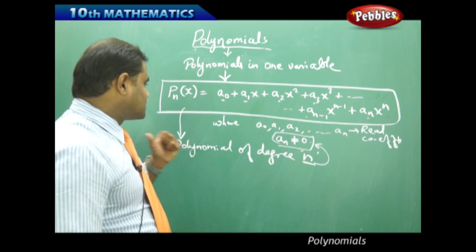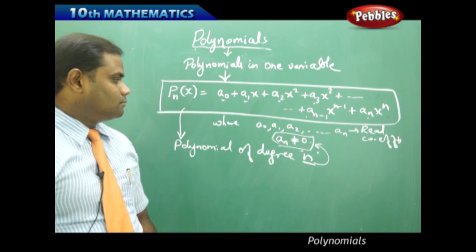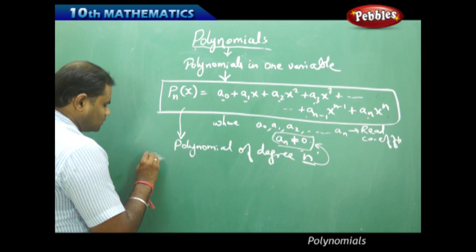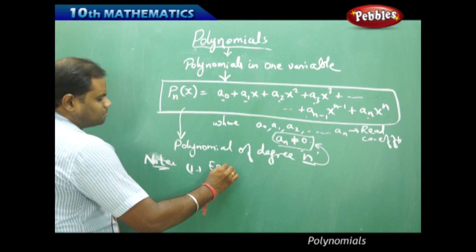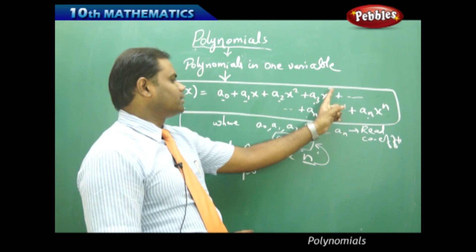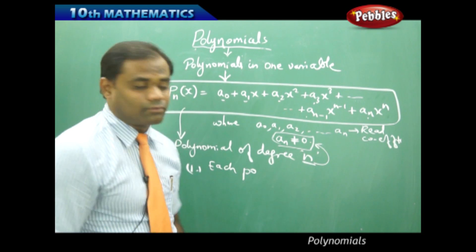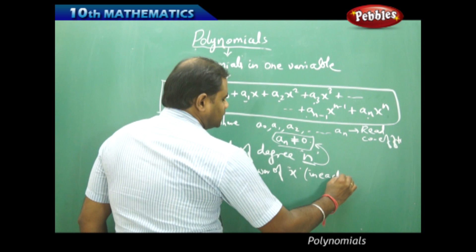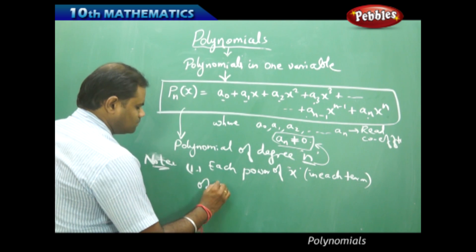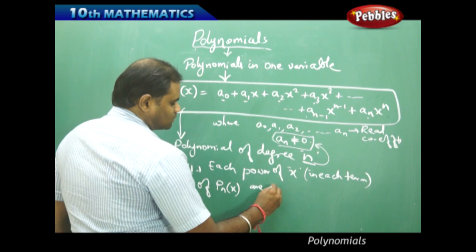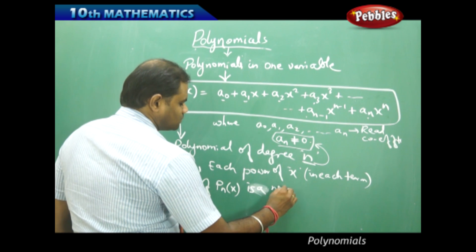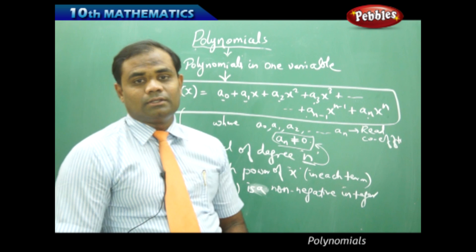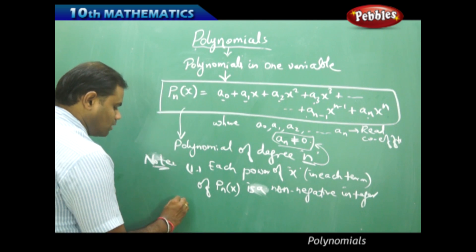So, let us understand this to be a polynomial of degree n, where each coefficient is real. The first important property to note is that each power of x — 1, 2, 3, 4 till n — are all non-negative integers, not fractions. Each power of x in each term of Pn of x must be a non-negative integer; the powers cannot be negative or fractions.